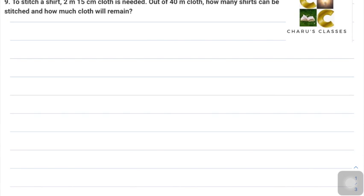Hello students, welcome to Charu's Classes. Today we are going to do question number 9, exercise 1.2, Knowing Our Numbers. To stitch a shirt, 2 meter 15 centimeter cloth is needed. Out of 40 meter cloth, how many shirts can be stitched and how much cloth will remain? Total cloth given is 40 meters.